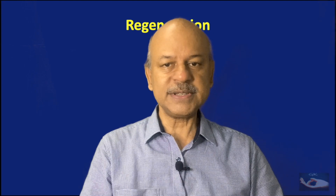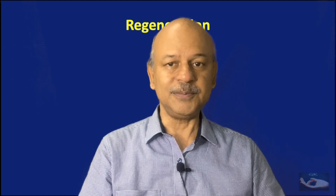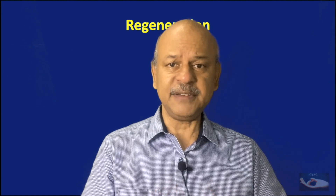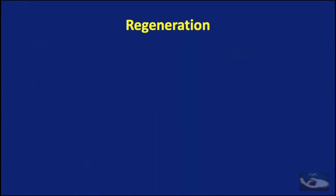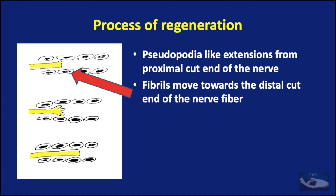There is another process called nerve regeneration, where the nerve is able to grow on its own. How does this occur, and what are the factors that affect nerve regeneration? Along with the degeneration that is occurring, there is also a process of regeneration of the cut axon. This process was described in detail by Cajal in 1926.